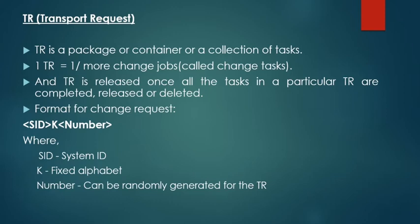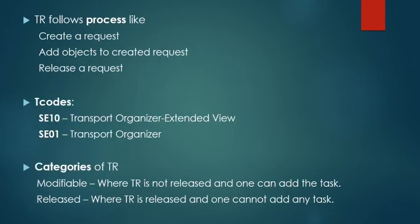These change requests are seen in the standard format as follows: SID stands for System ID, K is a fixed alphabet, and the number can be any randomly generated one. The simple process which TR follows is: creating a request, adding objects to the created request, and releasing the request.